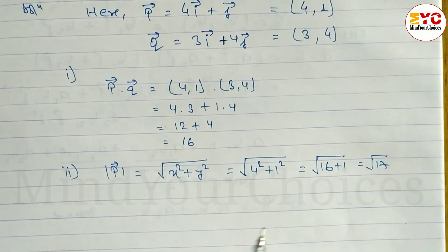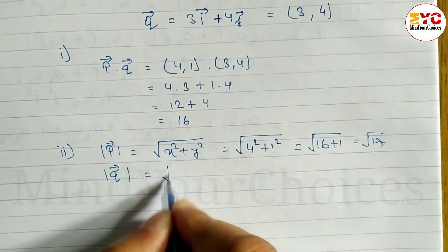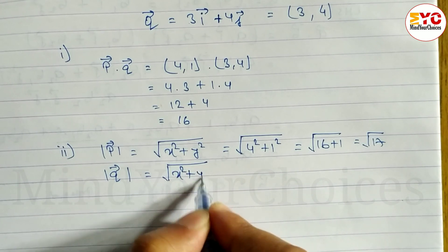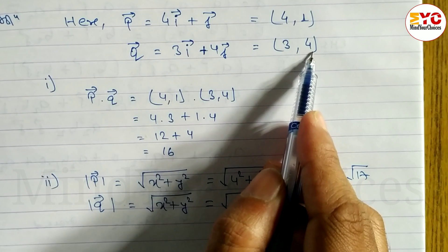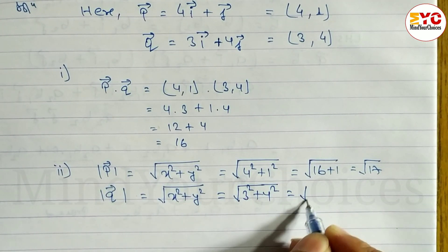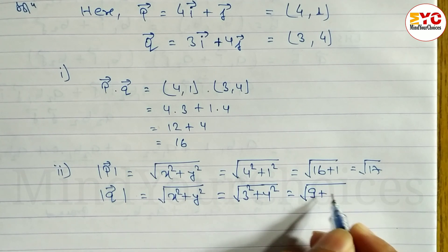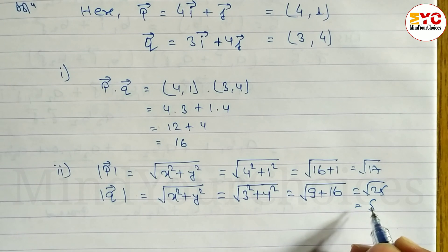Now magnitude of Q. The formula is same: x square plus y square. The x coordinate is 3, y coordinate is 4. So 3 square plus 4 square equals 9 plus 16, equals root under 25, equals 5.